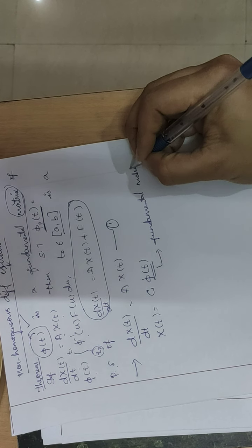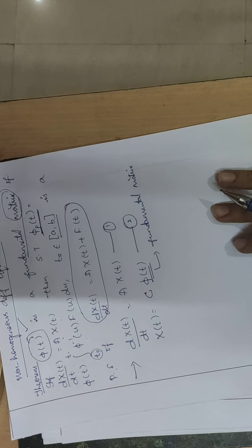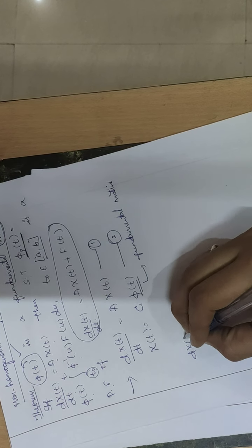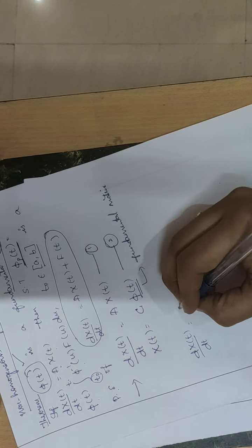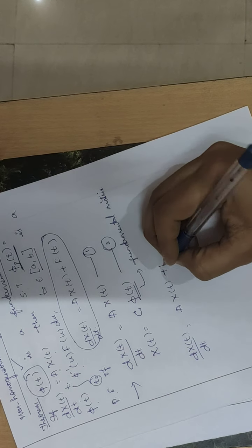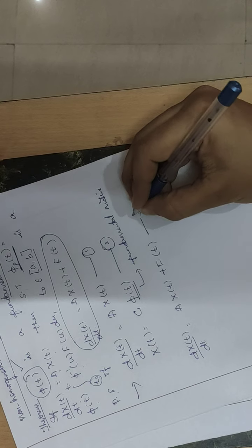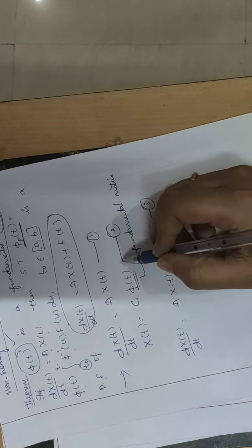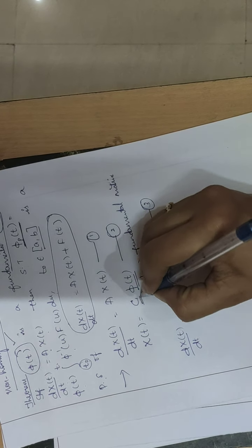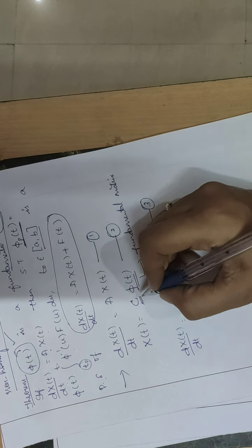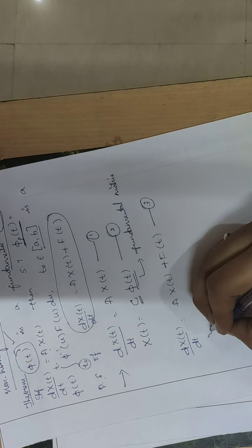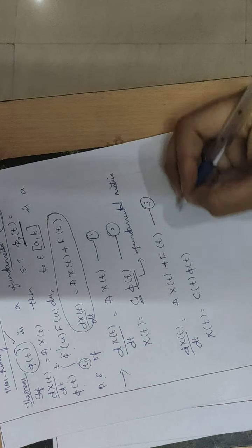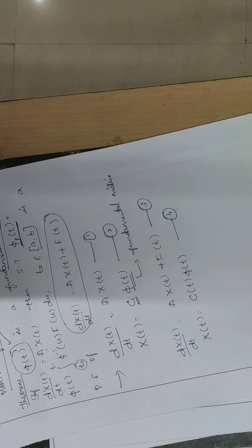Now let us consider the non-homogeneous differential equation dx(t)/dt = A·x(t) + f(t), call this equation number three. Before solving this equation, I will modify equation number two — since c is a constant, I will treat it as a function of t, so I can write x(t) = c(t)·phi(t). Call this equation number four.